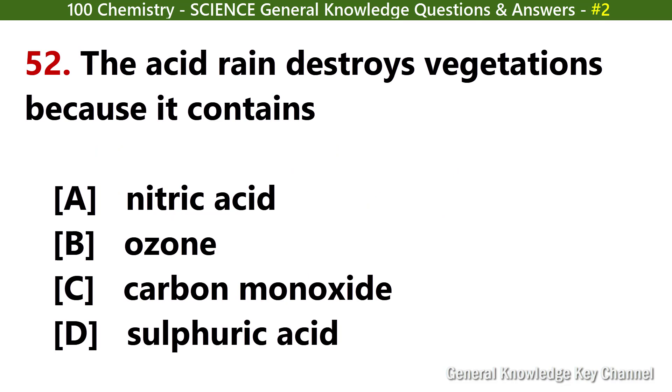Acid rain destroys vegetation because it contains? Answer D: Sulfuric acid.